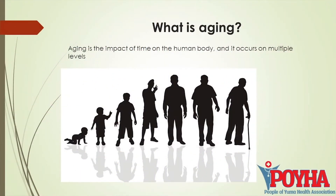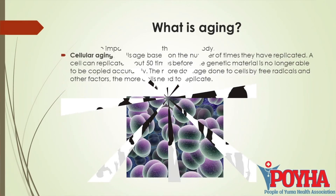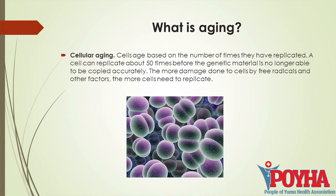Aging is the toll of time on the human body, and it occurs on multiple levels — you can see the pictures. One part of aging is cellular aging: cells become old based on the number of times they have replicated.